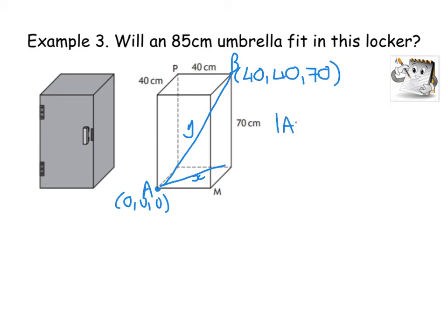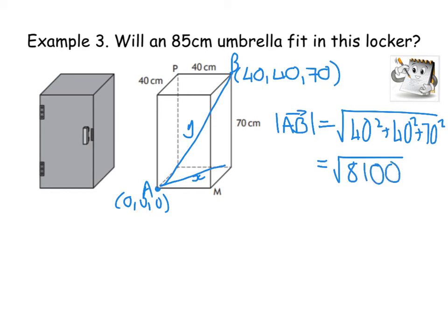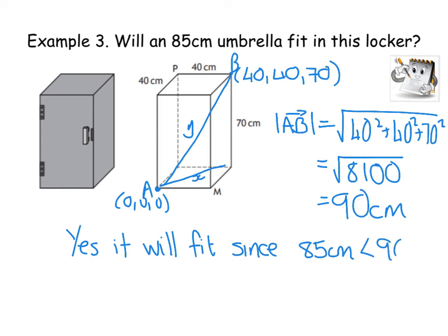If you've done magnitude before with vectors, you should know that this is simply the square root of 40 squared plus 40 squared plus 70 squared. If you put that into your calculator, this will give you the square root of 8100, which is 90 centimeters. So if the diagonal of the locker is 90 centimeters, can you fit an 85 centimeter umbrella in that locker? The answer is yes. It's not an acceptable answer to just say yes. Why will it fit? There must be some numerical comparison. Yes, it will fit since the umbrella is 85 centimeters, which is less than 90 centimeters. Or you could say it will fit and have another five centimeters left over. Something with numerical comparison.